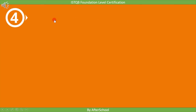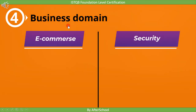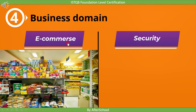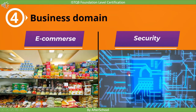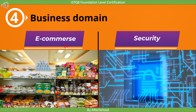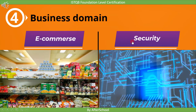The fourth context is business domain, which is similar to the last context of product and project risk. To understand this, consider two different domains: software for supermarket billing and software for the banking domain. Supermarket software will be more focused on load testing, whereas banking software will be tested more with respect to safety aspects. The fourth context is business domain.